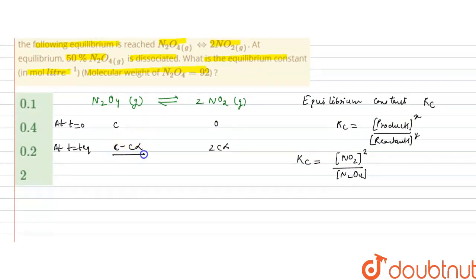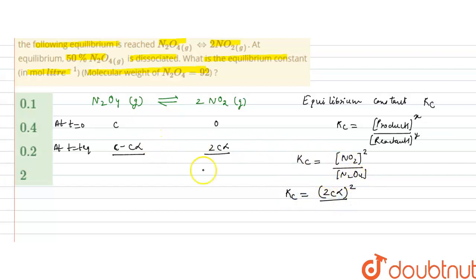Now we will write the concentrations at equilibrium. So Kc = (2c·alpha)² divided by (c minus c·alpha), which gives 4c²·alpha² divided by c(1 minus alpha).